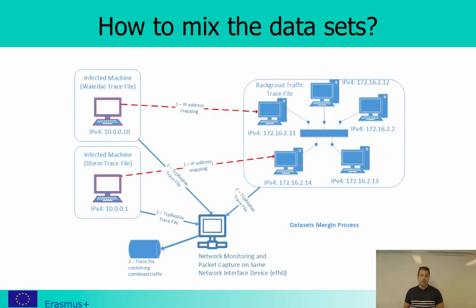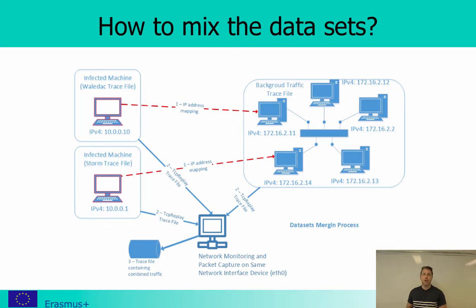I take all the traffic from the infected machine and map it to one of the machines generating my background traffic. That mapping could be done by simply changing the IP addresses. Similarly, I could have two infected machines mapped into different machines from the background traffic. In this way, I end up with a traffic trace containing both malicious and non-malicious traffic, where malicious traffic appears to come from computers also generating normal traffic. But I still have to be careful not to introduce any bias — for example, through this timing issue.